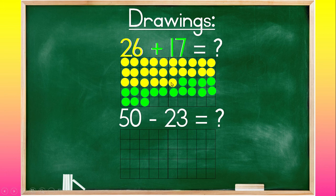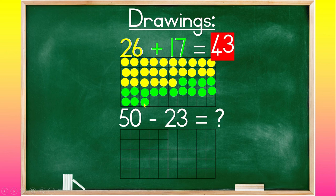So we already know that I have 26 yellow balls. So now we can count from 26 to add the 17. So 26, 27, 28, 29, 30, 31, 32, 33, 34, 35, 36, 37, 38, 39, 40, 41, 42, 43. So 26 plus 17 equals 43.